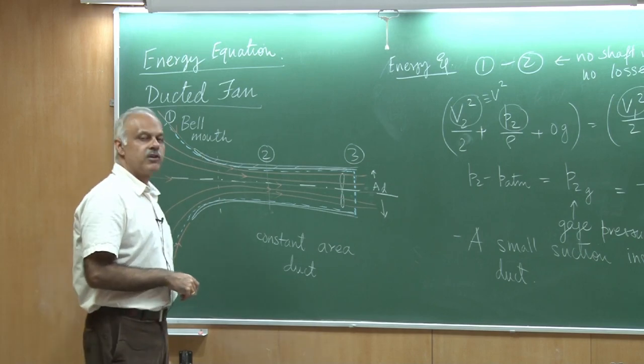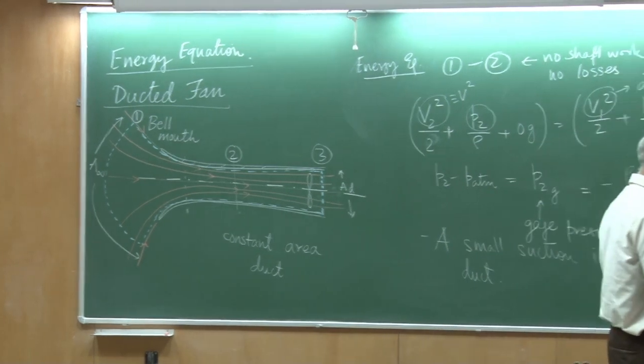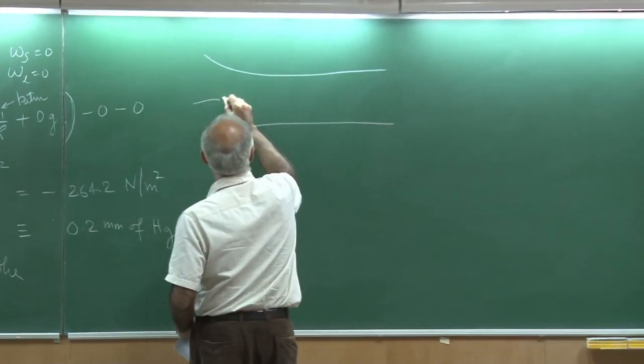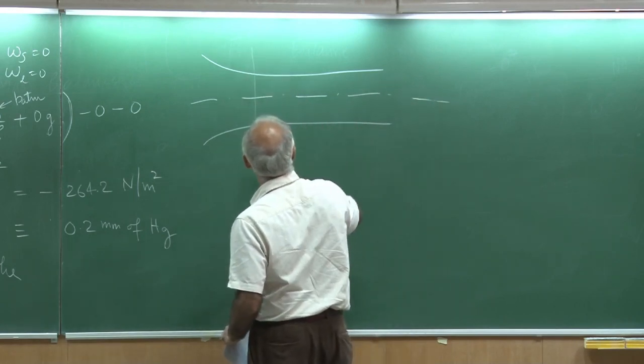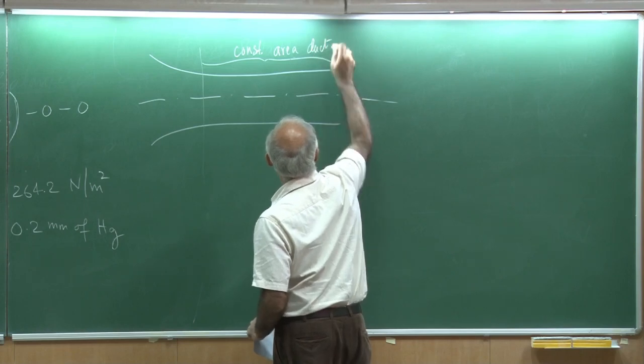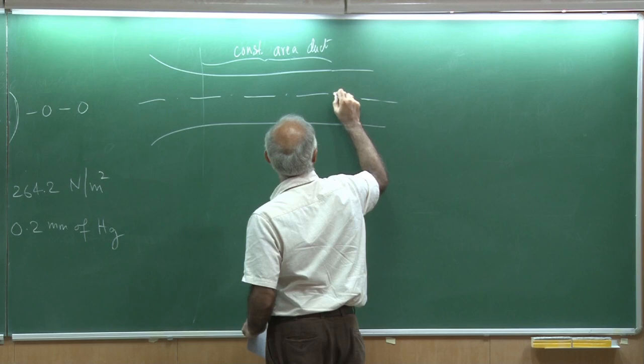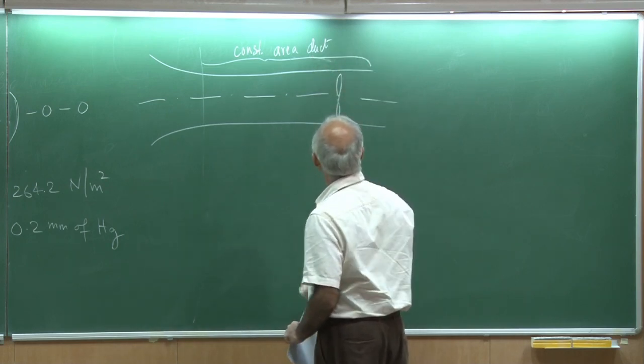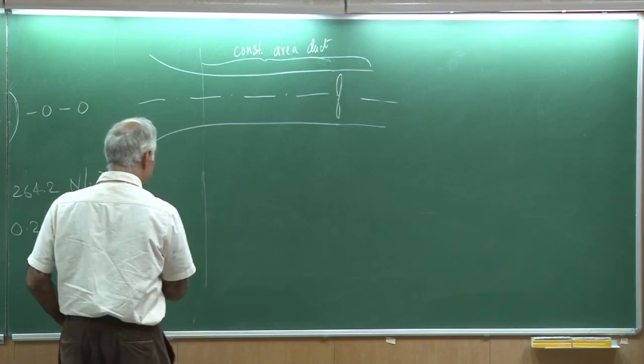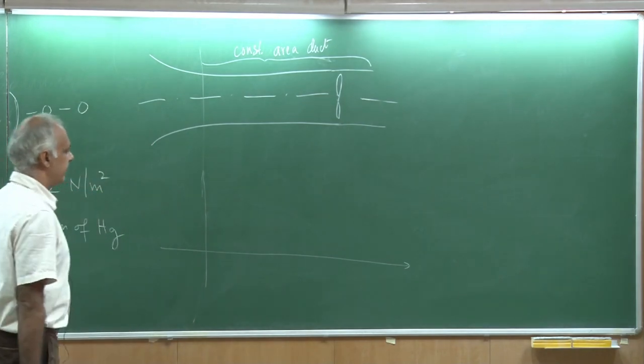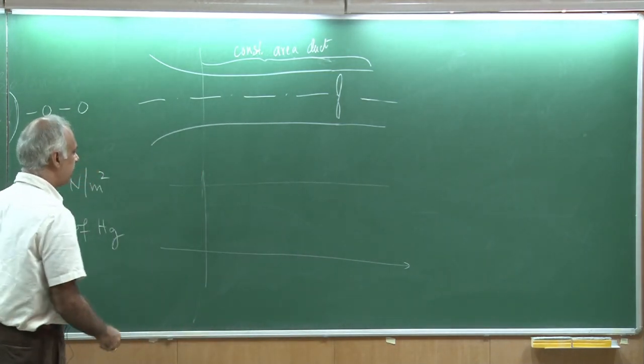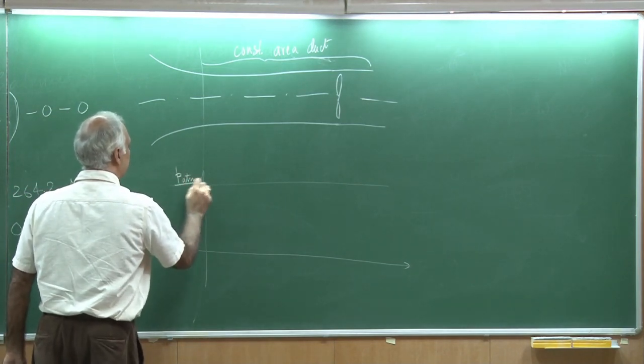Let us draw in terms of the heads what the profile looks like. Let me draw the geometry for you once again. This is the constant area duct, and let's say this is where my fan is. This whole thing is the constant area duct. Suppose now I am interested in trying to figure out what happens to the pressure profile. Let's say this is my datum and I plot here P atmosphere by rho g.